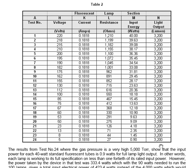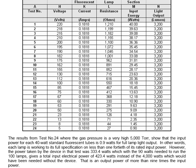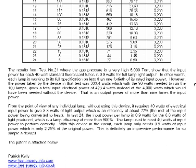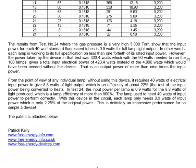The results from test 24, where the gas pressure is a very high 5,000 torr, shows that the input power for each 40 watt standard fluorescent tube is only 0.9 watts to give the full lamp light output. In other words, each lamp is working to its full specification on less than 1/40th of its rated input power.